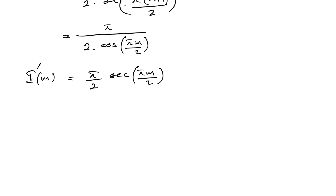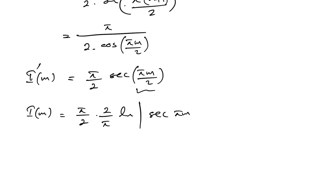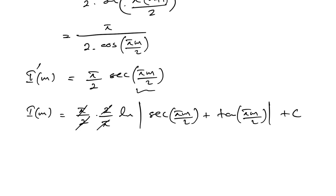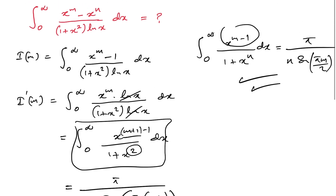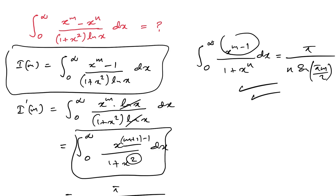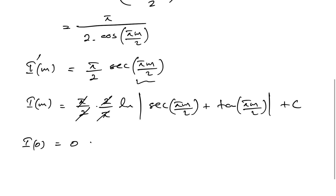Now according to Feynman's technique we should integrate with respect to m. So I(m) equals pi over 2 times 2 over pi times the natural log of the absolute value of secant(pi·m/2) plus tan(pi·m/2), plus a constant C. The factors of 2 and pi cancel. Plugging in m equals 0, we know I(0) equals 0, so the constant C equals 0.